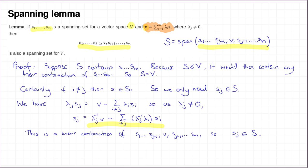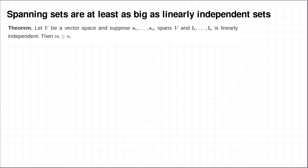That completes our proof of the spanning lemma. The next result we need is sometimes called the Steinitz exchange lemma. What it says is that if you have a vector space V which contains a spanning set S1 up to SM, and a linearly independent set L1 up to L_N, then M is greater than or equal to N. You could rephrase that by saying any spanning set must be at least as large as any linearly independent set. This is going to be useful to us in proving that any two bases have the same size, which we'll come to on the next slide.